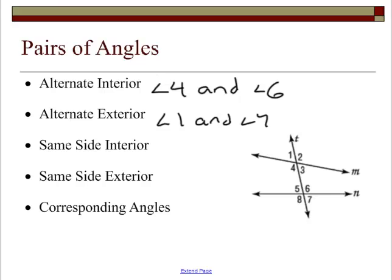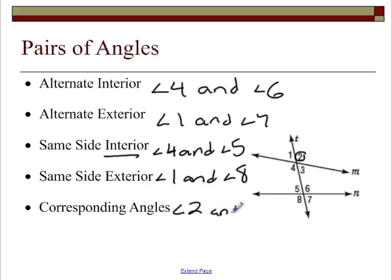Now let's take a look at same side interior. Same side means it's on the same side of the transversal. Those are all on the same side, but it says interior. So we're going to pick the two that are on the inside, angle four and angle five. Same side exterior, we want the ones on the outside, angle one and angle eight. Corresponding angles means if you were to take these four and bring them down and lay it right on top of here, which one is in the same spot? Angle two is in the top right corner, and that's where we get angle six. Alternate interior and alternate exterior go across the transversal. Same side interior, same side exterior stay on the same side. Corresponding are in the exact same spot.